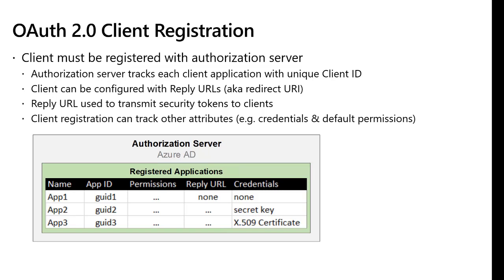In OAuth, you must register a client application with the authorization server before you can use it. When you register a new application, the authorization server creates a unique GUID — a client ID or application ID. The client application can also be configured with a reply URL, also known as a redirect URI. When the authorization server needs to send an access token or other sensitive data, having a registered reply URL means it can pass data more securely to an endpoint it knows you own, secured with HTTPS. Client applications can also be registered with other attributes such as credentials and default permissions.